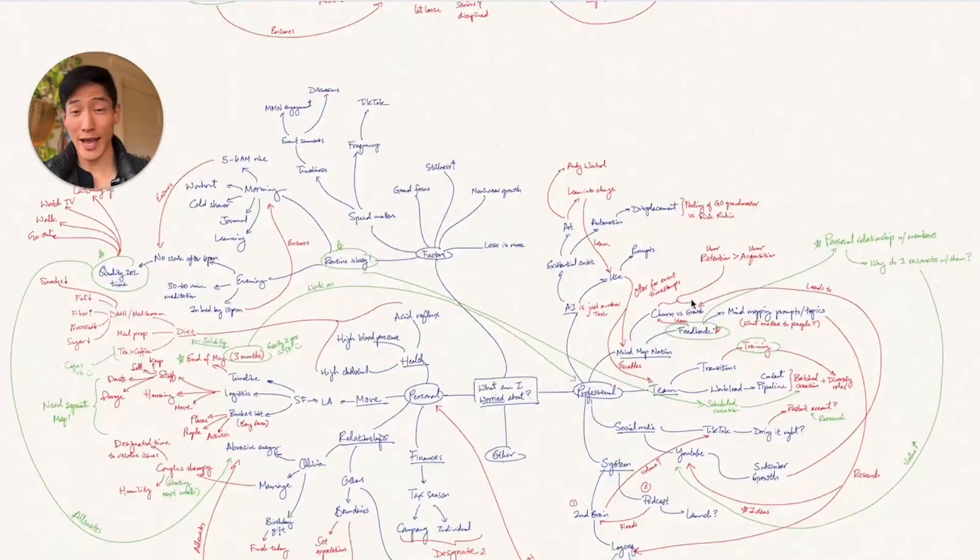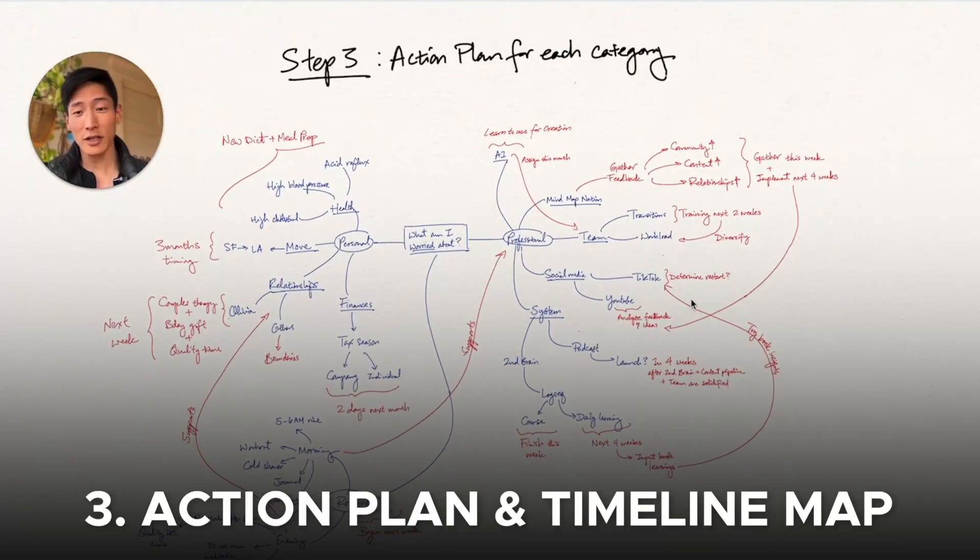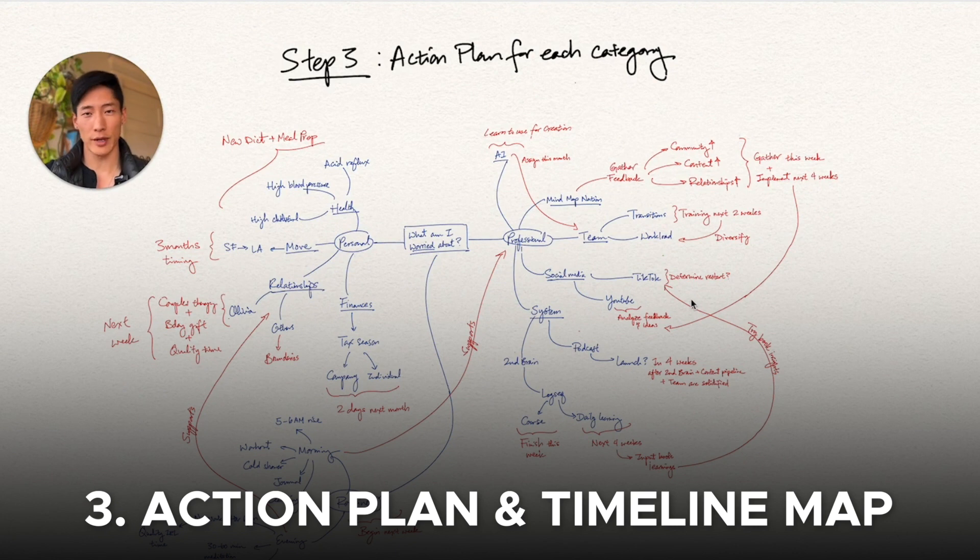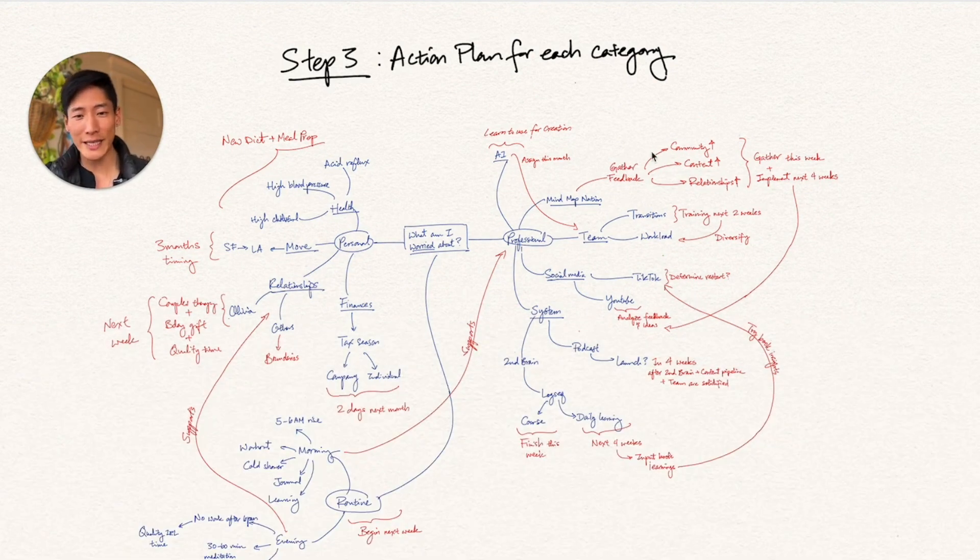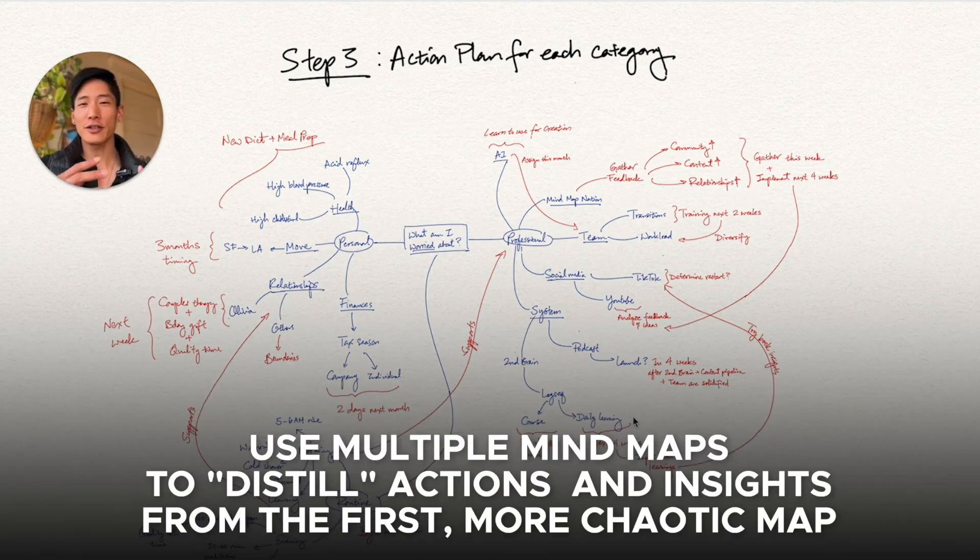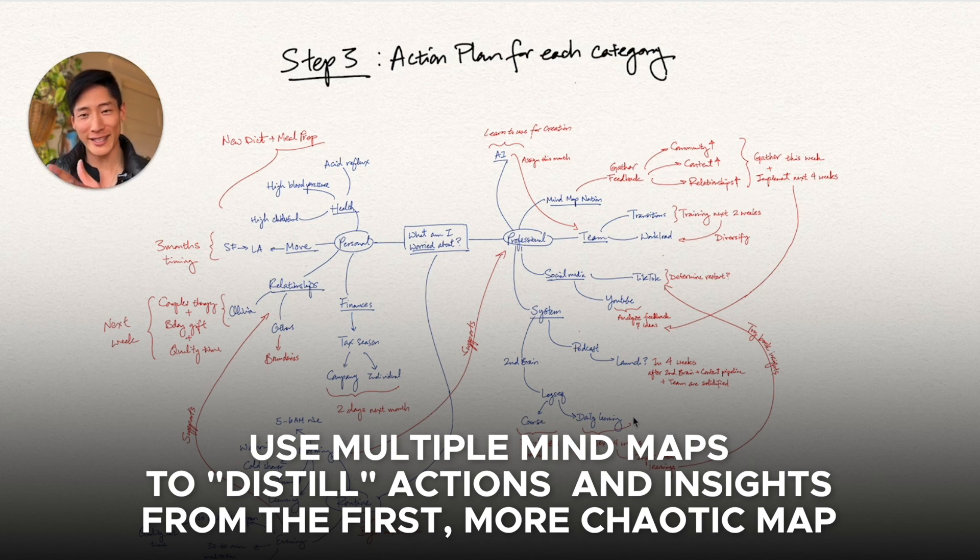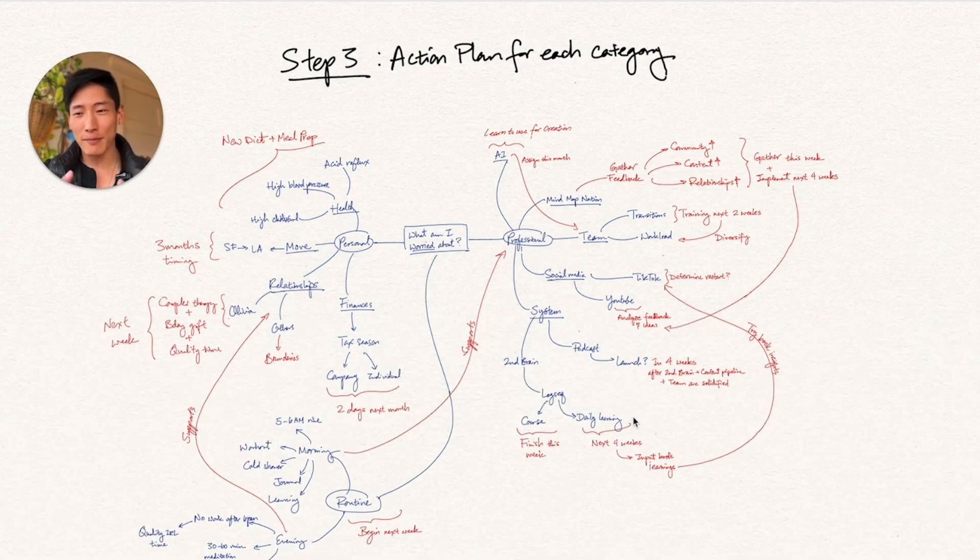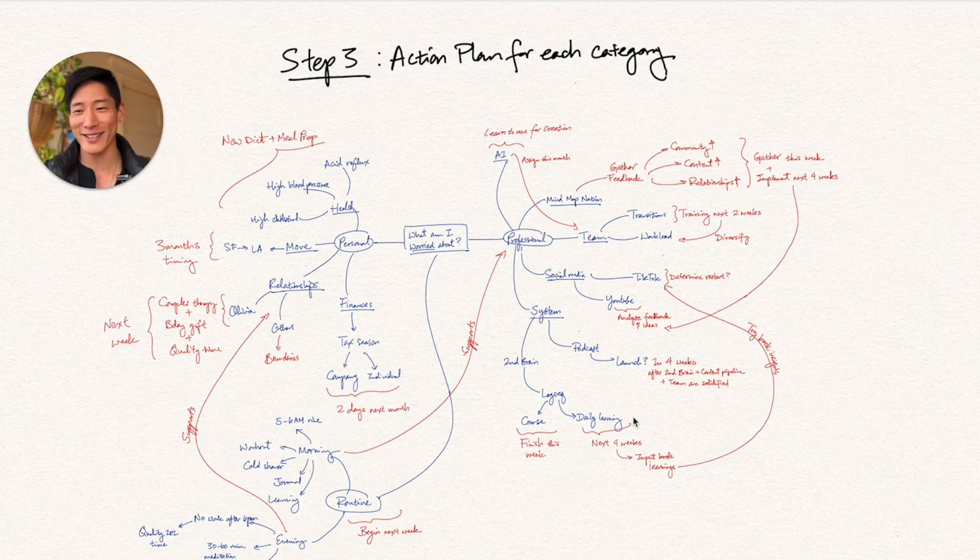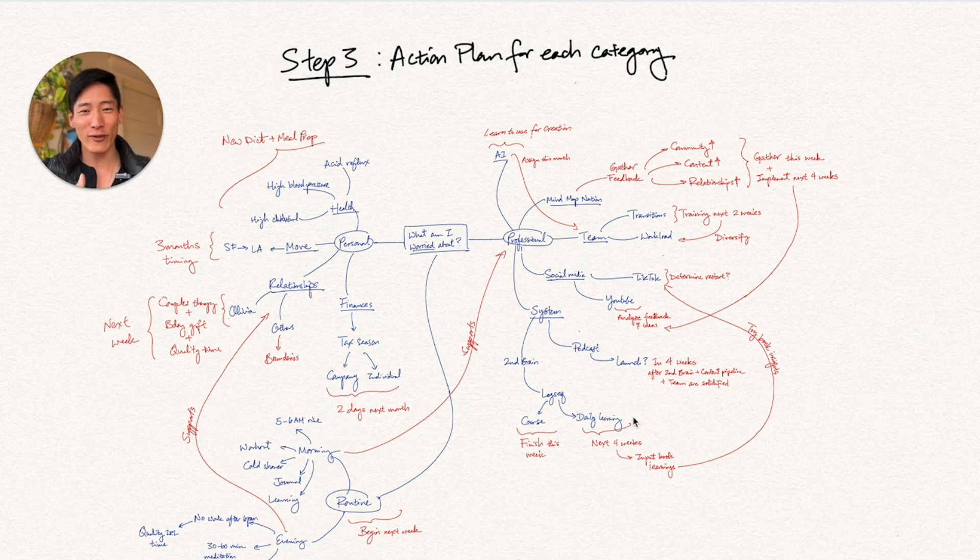And this is what I call having a holistic or whole understanding of the larger picture, which will then help us prioritize which parts of this map do we want to cover first. Because sometimes we're going to discover that there are certain actions that we can take that will have an outsized effect on the rest of our worries. And then the third and last step is to actually create a new mind map that mirrors what we've already made. And this one is far cleaner than the first one. I like to use multiple mind maps as part of a distillation process.